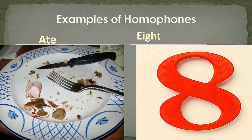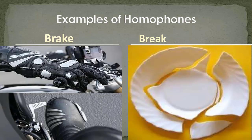Let's start with these examples. First: 'ate' and 'eight' — he ate all the food, and this is the number eight. Same pronunciation, different meanings. Next: 'brake' and 'break' — he was driving fast and held the brakes to stop the car, and you can break something, like a plate or dish. So 'brake' and 'break' are homophones.